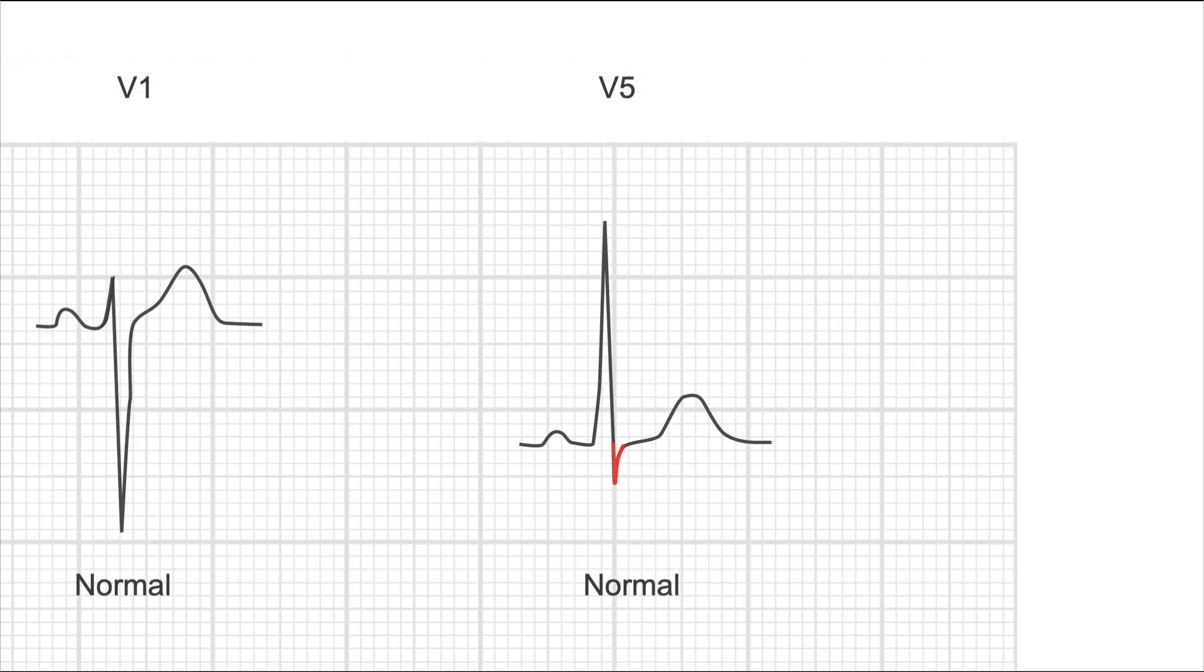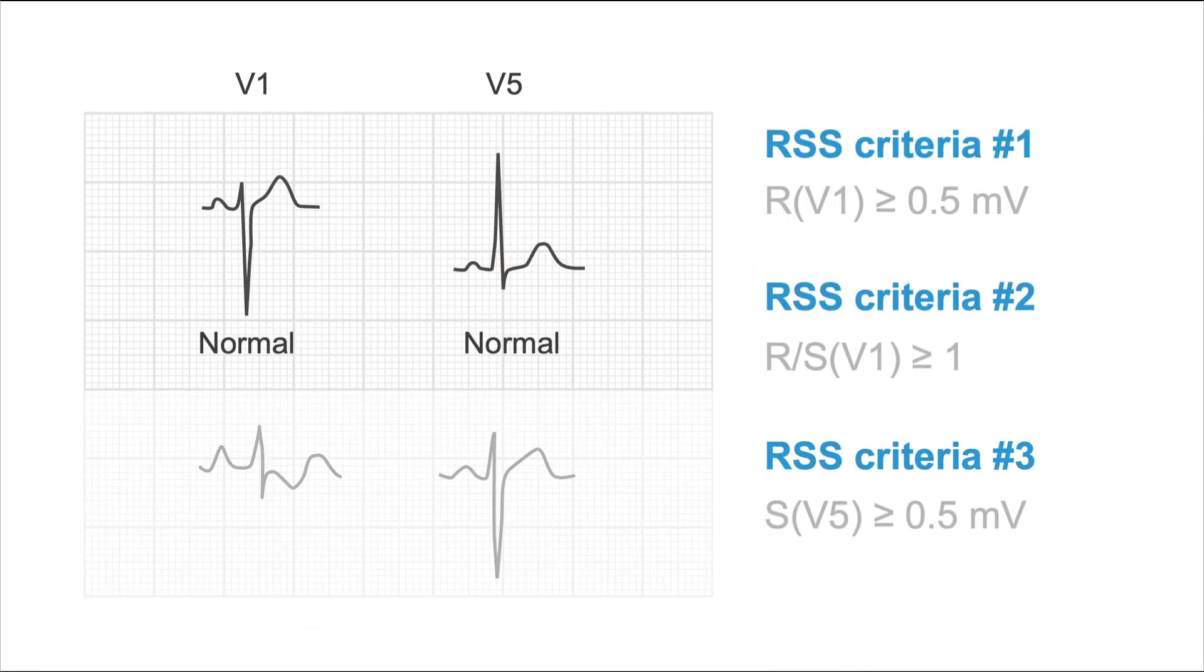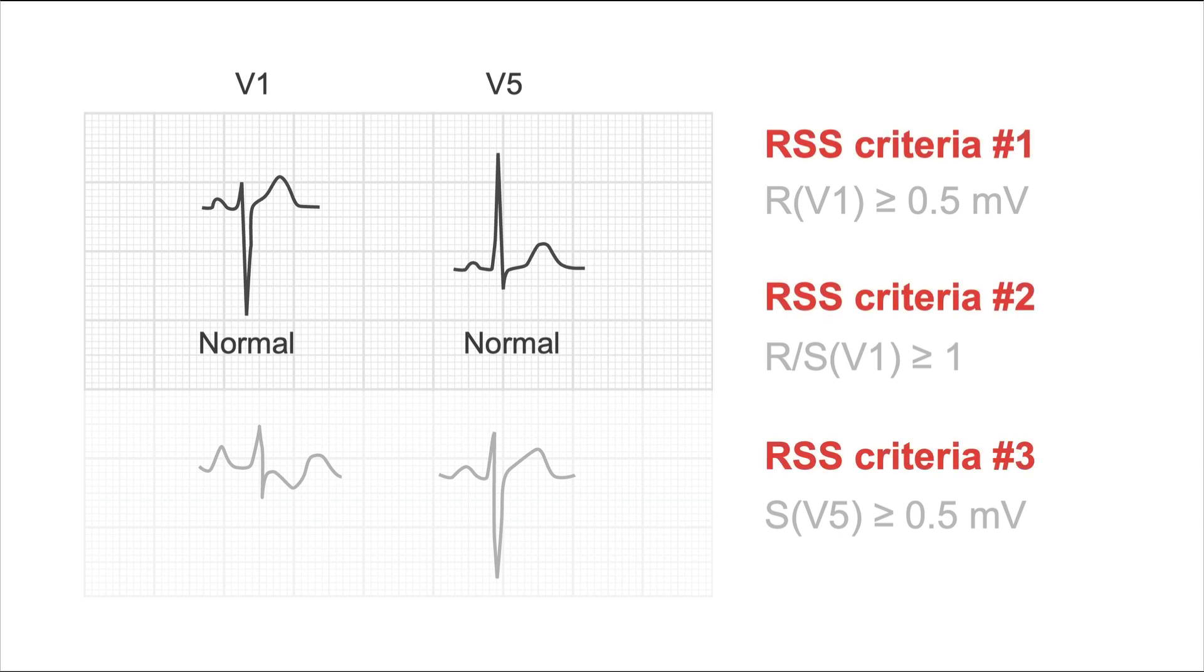Next, let's look at the S in V5. Is it above 0.5 millivolts? Let's count. It's probably starting somewhere around here. It is 1, 2, 3, 3.5 millimeters, meaning 0.3 to 0.4 millivolts. So, definitely not positive. All three RSS criteria are negative, which makes the presence of right ventricular hypertrophy very unlikely.